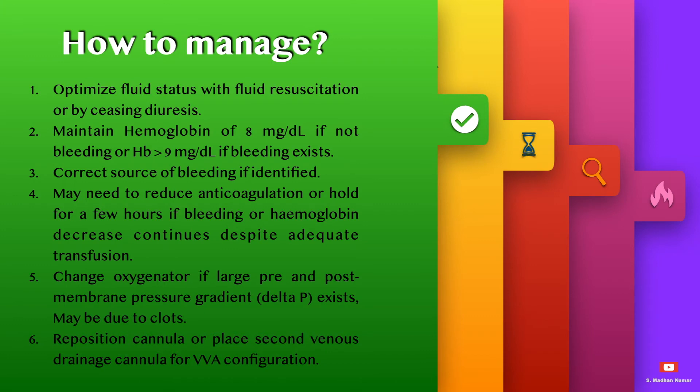May need to reduce anticoagulation or hold for a few hours if bleeding or hemoglobin decrease continues despite adequate transfusion of packed red blood cells. Change the oxygenator if a large pre and post membrane pressure gradient exists, as it may be caused by clots. Reposition the cannula or place a second venous drainage cannula in a VV-A configuration to address the issue.